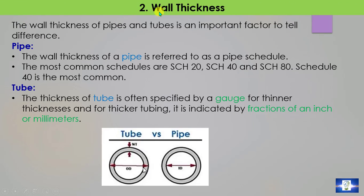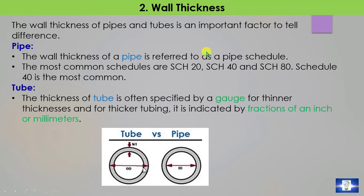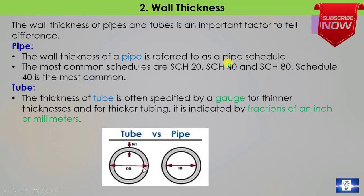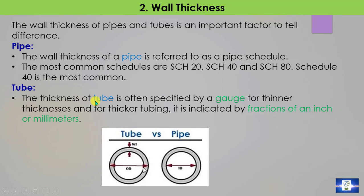Point 2: Wall thickness. For the case of pipe, wall thickness is referred to as the pipe schedule. The most common schedules are Schedule 20, Schedule 40, and Schedule 80, with Schedule 40 being the most common. For the case of tube, the thickness is often specified by a gauge for thinner sections, and by a fraction of an inch or millimeter for thicker tubing.